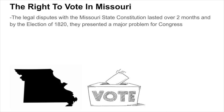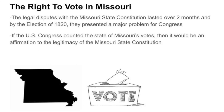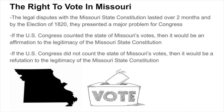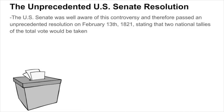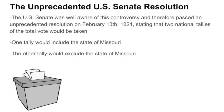These legal disputes lasted over two months, and by the election of 1820, they presented a problem for Congress. If the U.S. Congress counted Missouri's votes, then it would be an affirmation of the legitimacy of the Missouri State Constitution. Meanwhile, if Congress did not count Missouri's votes, then it would be a refutation of the legitimacy of the Missouri State Constitution. The U.S. Senate was well aware of this controversy, and therefore passed an unprecedented resolution on February 13, 1821, stating that two national tallies of the total vote would be taken — both a tally with Missouri included and one with Missouri excluded.